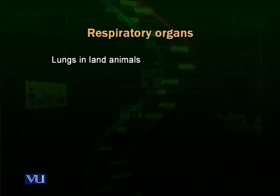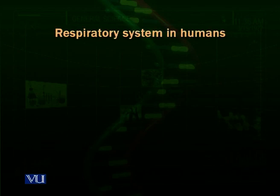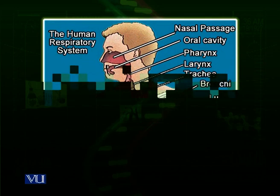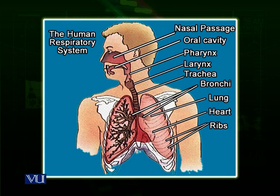Now we look at various parts of the respiratory system - what parts actually make our respiratory system. We have mainly lungs. Human beings are mainly the land vertebrates, the mammals, and human beings have lungs as their major respiratory surface and organs. The human respiratory system consists of lungs and air passageways, which allow movement of air from the outside through nostrils all the way to the lungs.